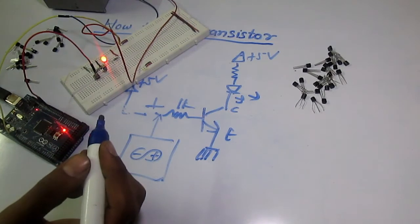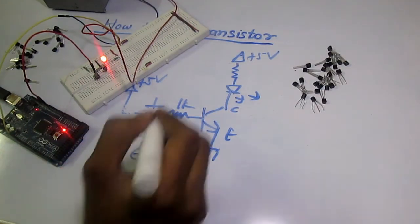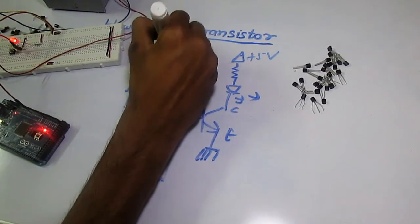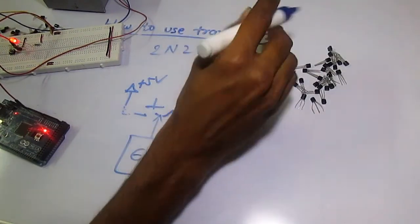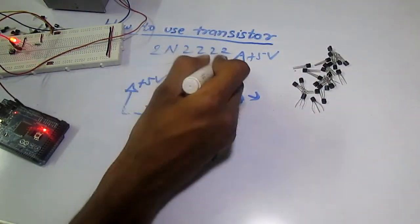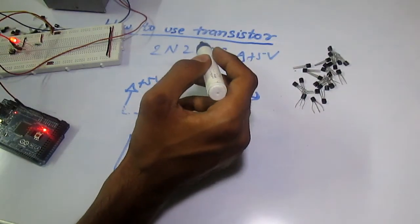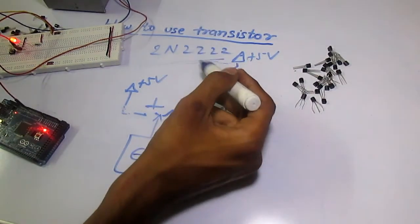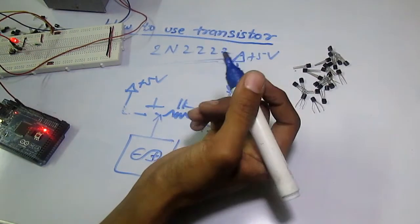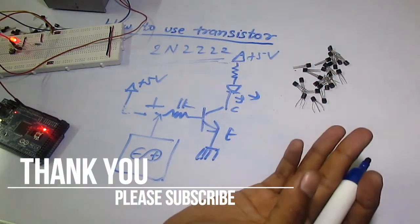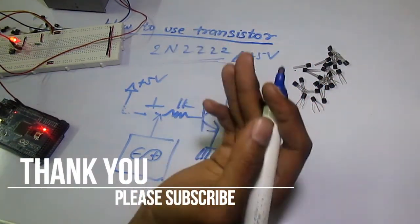The basic transistor that everybody uses in NPN type is the 2N2222 transistor. I prefer this because it has a very high current rating and a high switching rate. So this is how transistors work. Thanks for watching.